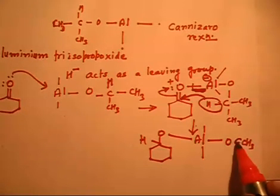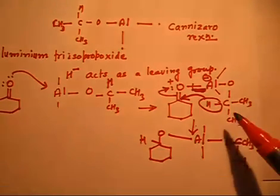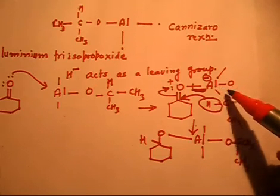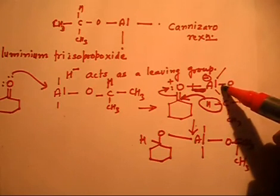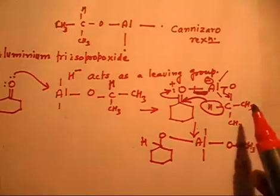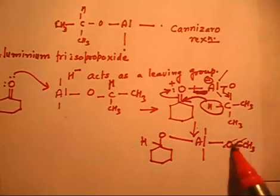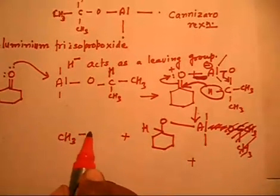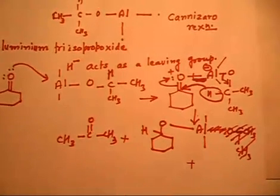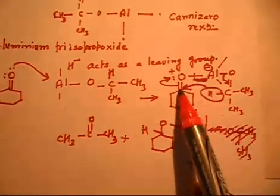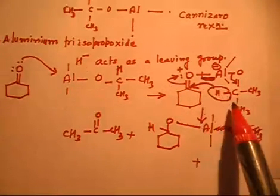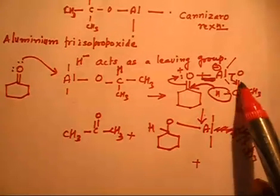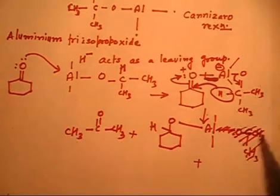To remove the positive charge on carbon, I break the C–O bond releasing CH3COCH3 (acetone) as a byproduct. So: the hydride goes to the carbonyl carbon, the double bond goes onto oxygen, then the aluminum–oxygen bond breaks, releasing acetone (CH3COCH3). The aluminum is now attached to the reduced product with two remaining isopropoxide bonds.